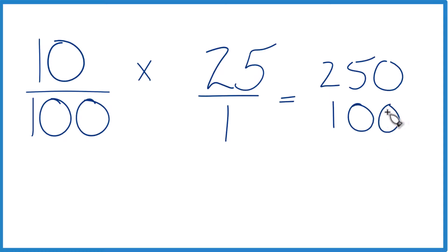And we can simplify this down because 50 goes into 255 times and 50 goes into 100 twice. So we end up with 5 over 2. And you could simplify that to 2 and 1 half.